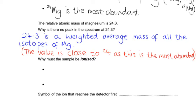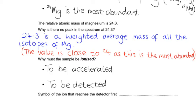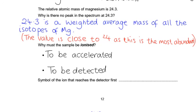Just another little recap. Why must our sample be ionized? It needs to be ionized so it could be accelerated, and it needs to be ionized so it could be detected. Remember, it's accelerated by an electric field, a negative and a positive plate, and it's detected by an ion current detector where electrons are removed from the detector. So it must be ionized for those two processes.